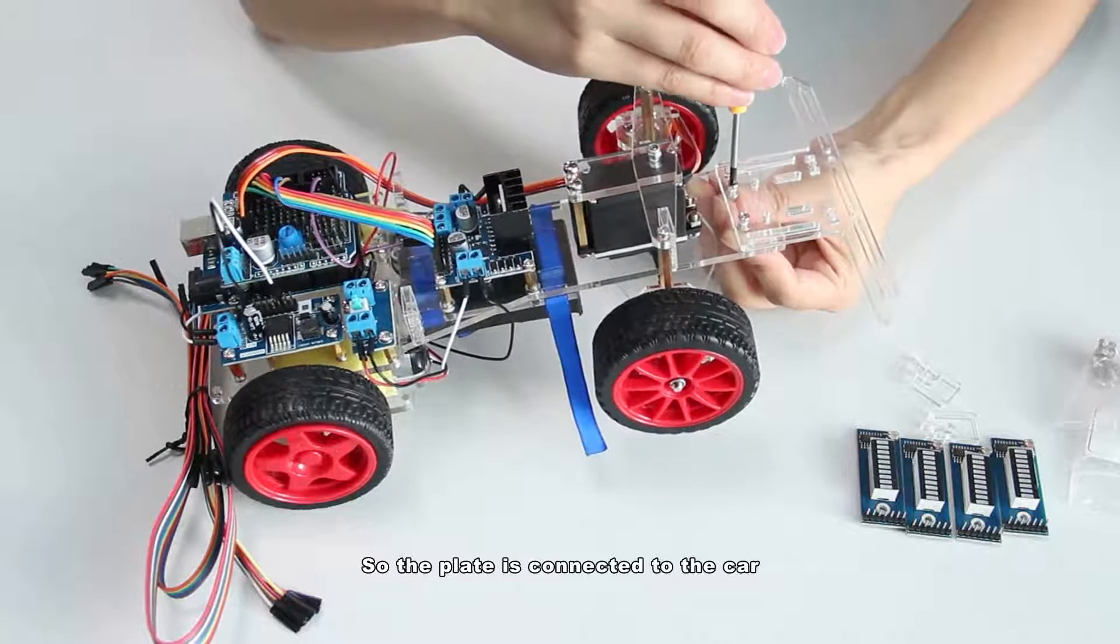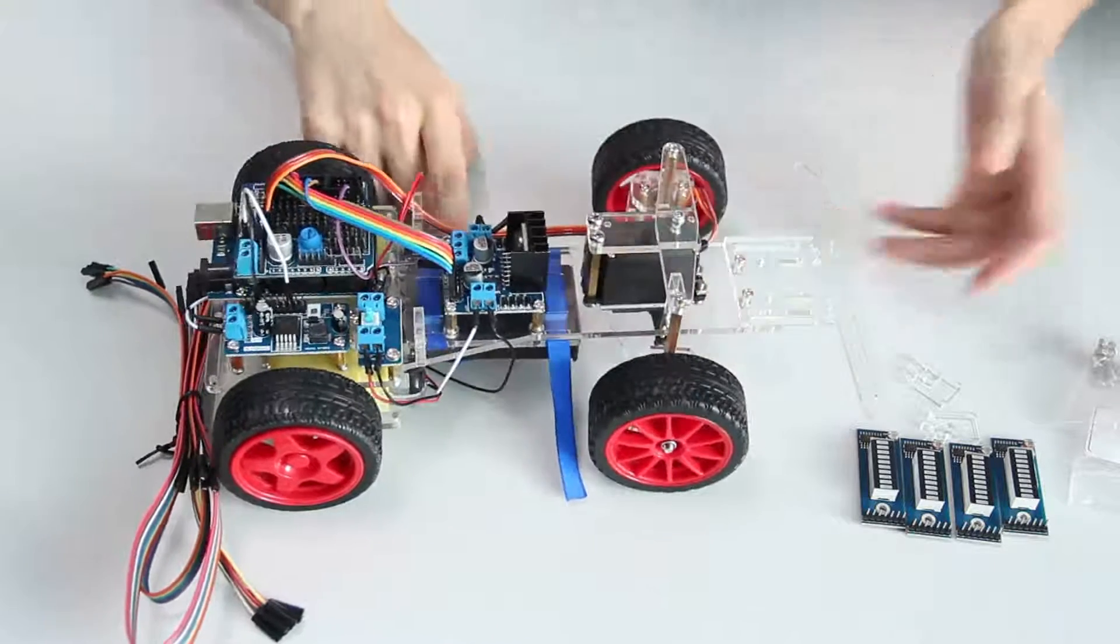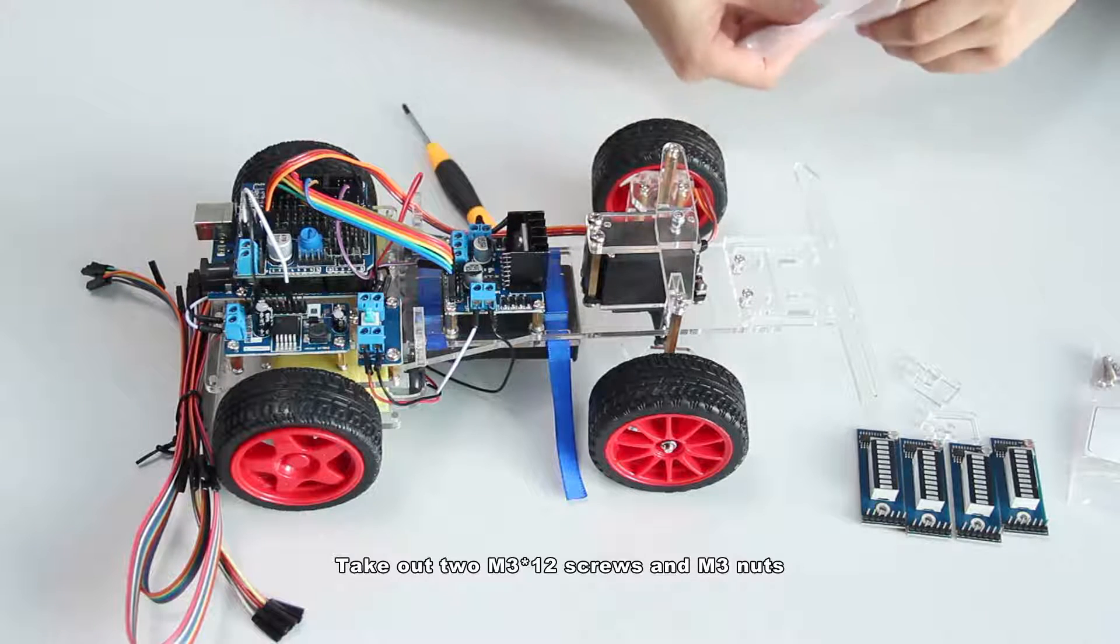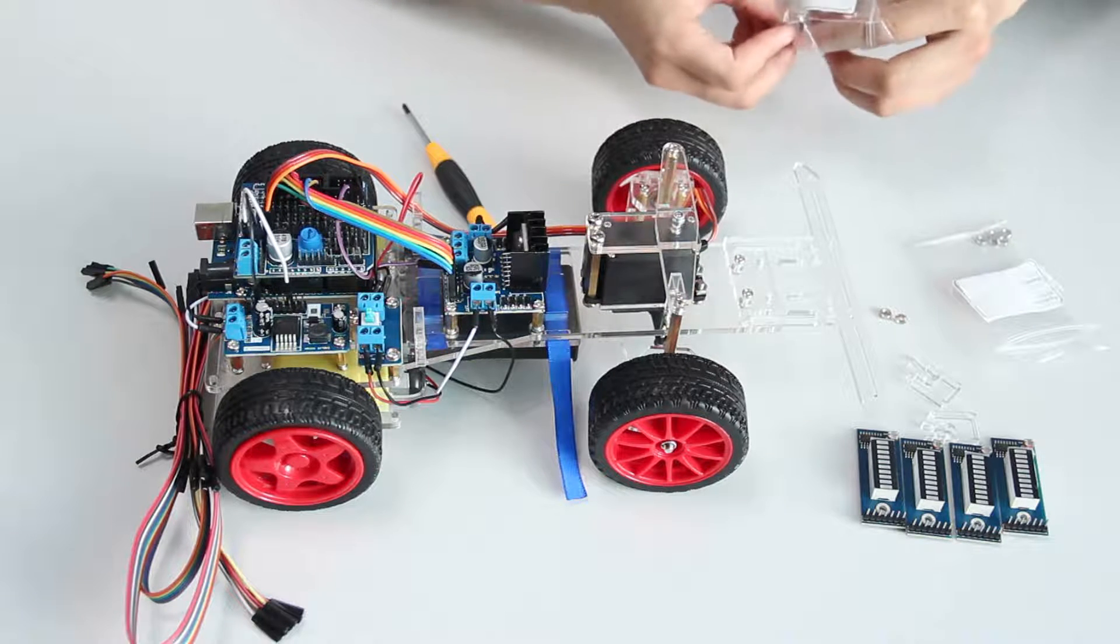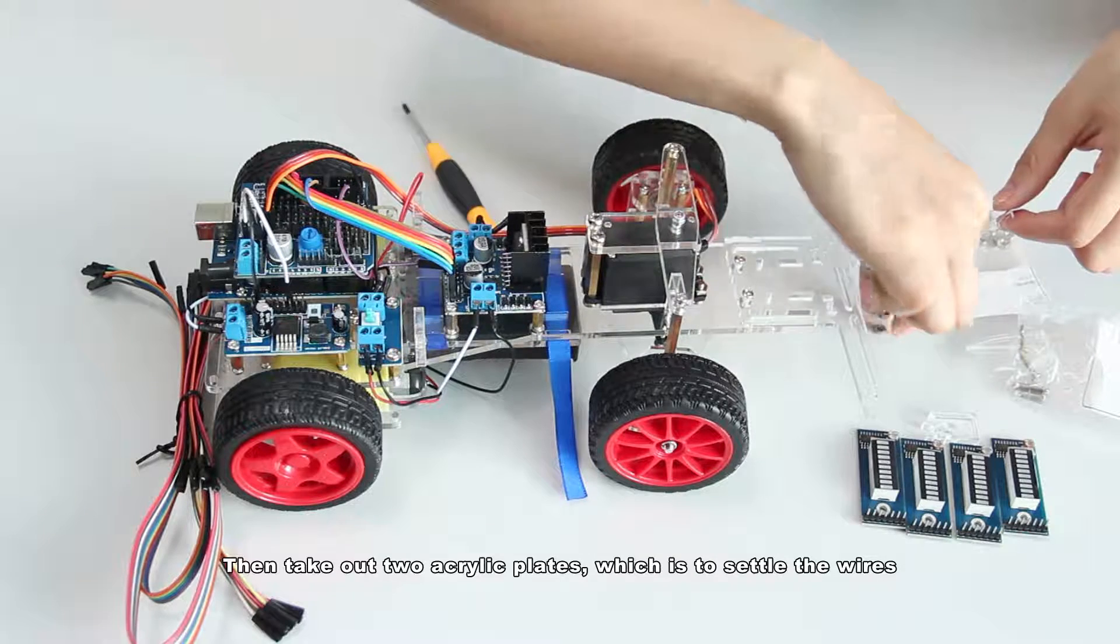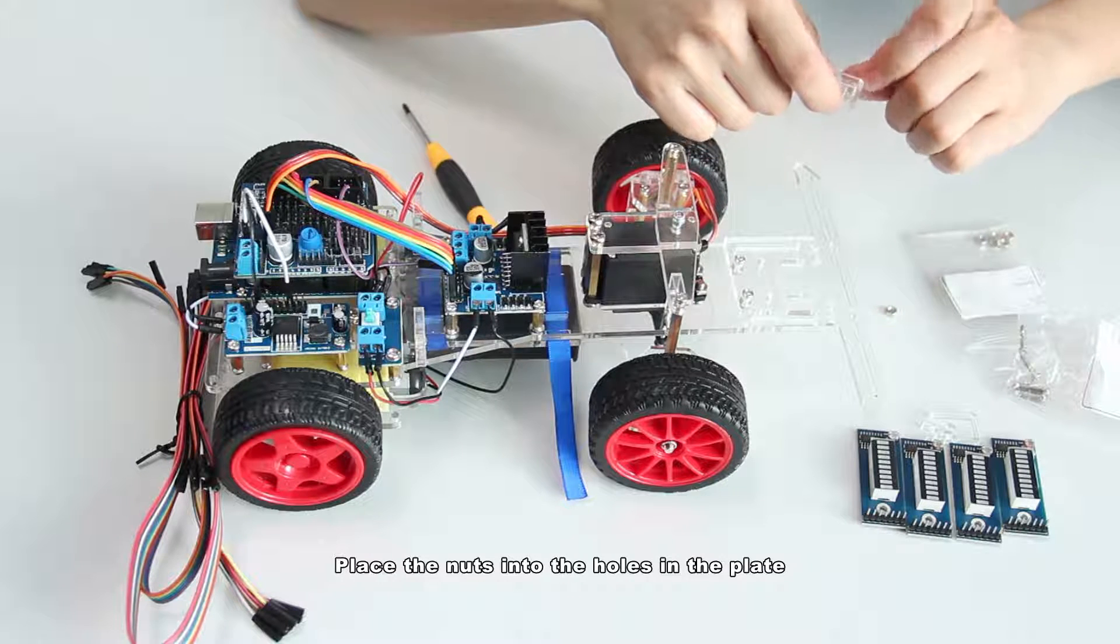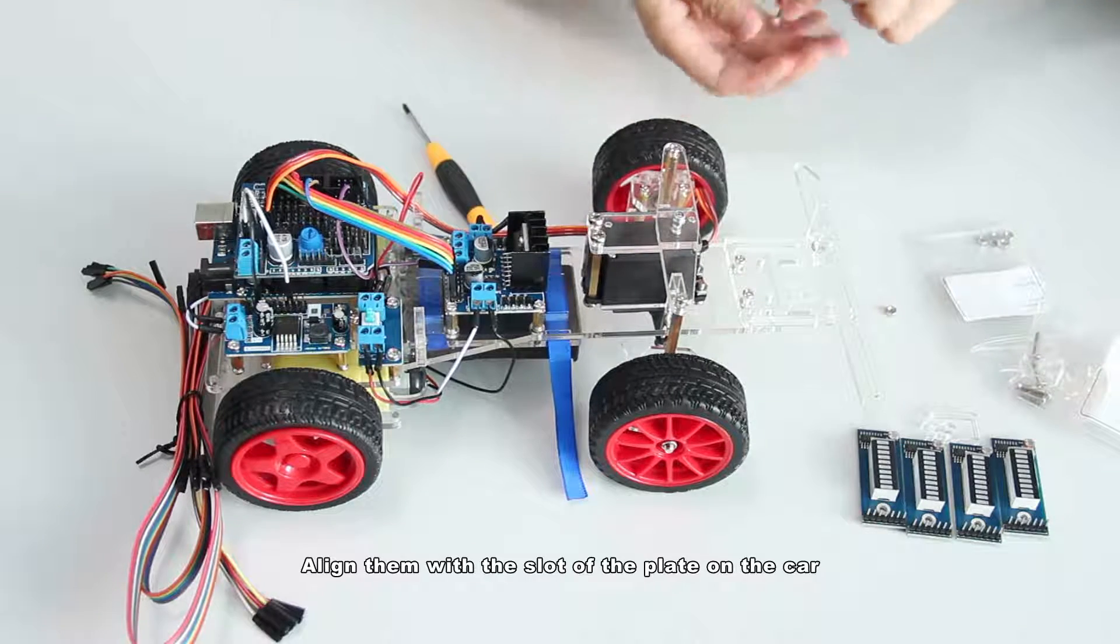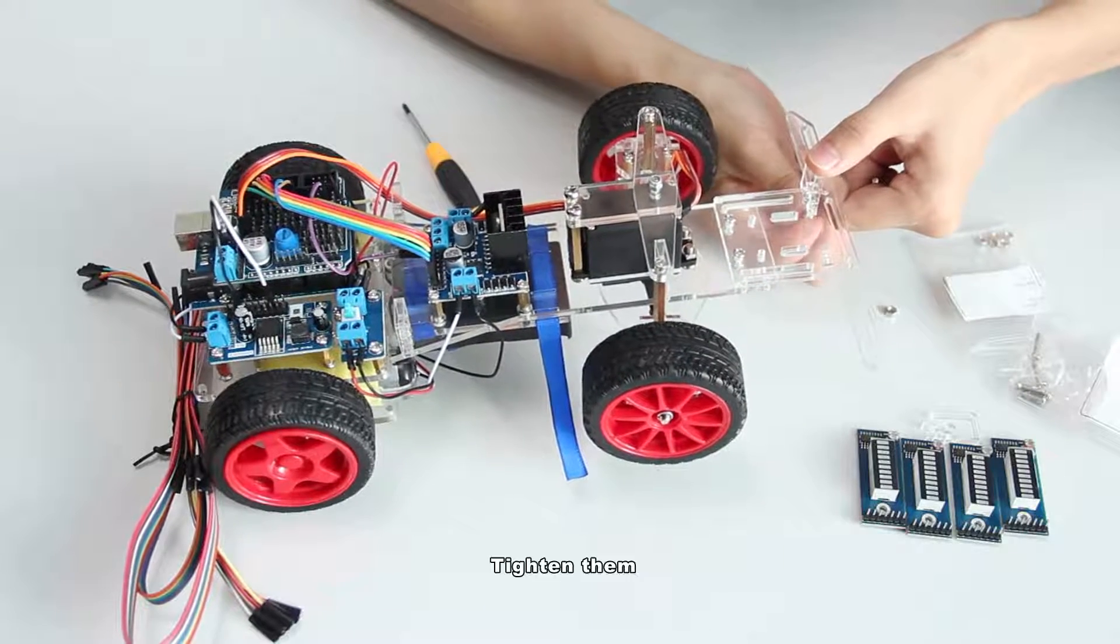So the plate is connected to the car. Take out two M3x12 screws and M3 nuts. Then take out two acrylic plates which is to settle the wires. Place the nuts into the holes in the plate. Align them with the slots of the plate on the car. Insert the screws and tighten them.